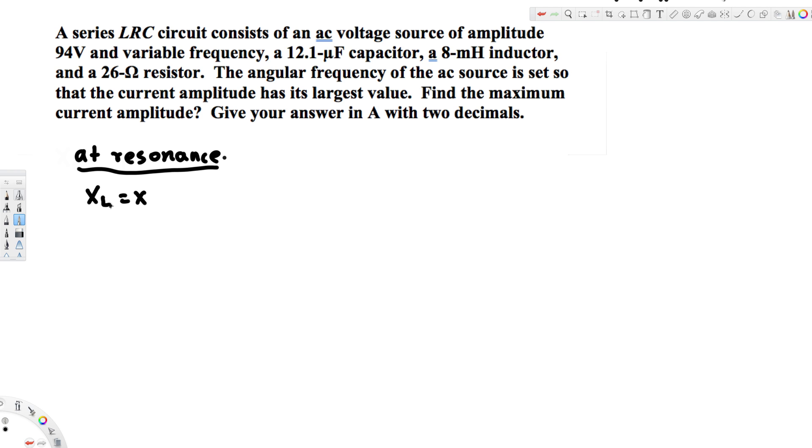To find the maximum current amplitude, we use this equation: I is equal to V over impedance.